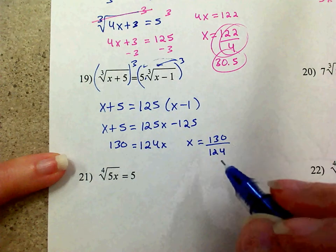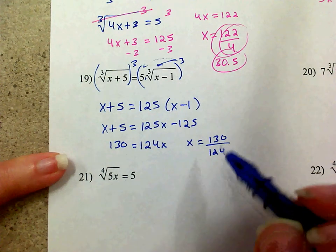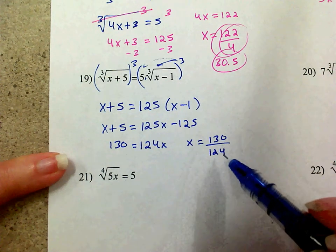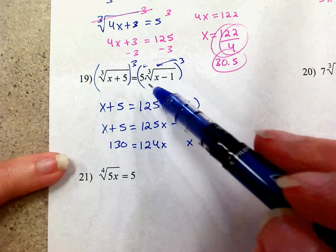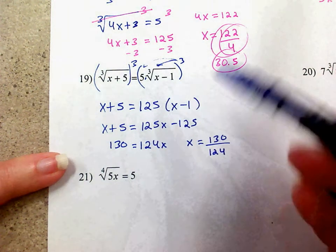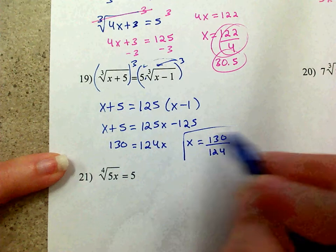So I'm going to subtract x and get 124x, add 125 and get 130. So x equals 130 divided by 124. We don't have to worry about negatives and positives with cube roots, so there we go.